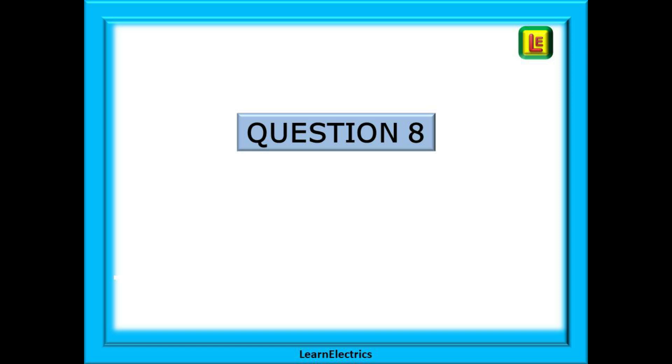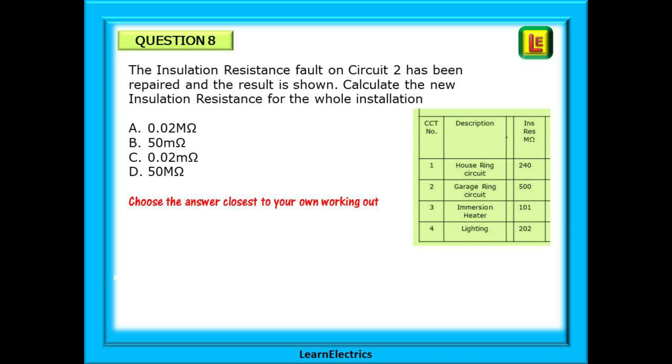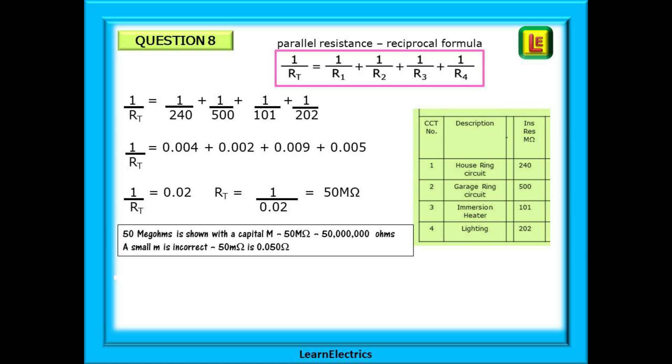And lastly, Question 8. The installation resistance fault on Circuit 2 has been repaired, and the result is shown. We are asked to calculate the new installation resistance for the whole of the installation. Again, pause the video and answer the question. We will need to use the reciprocal formula for parallel resistance again, as shown at the top. Follow the calculations through, and notice that we have rounded the individual numbers to just three decimal places. Your rounding of numbers may be very slightly different to mine, but still close enough. We should have an answer of about 50 megaohms.